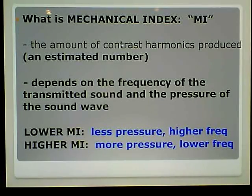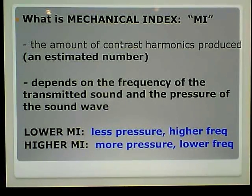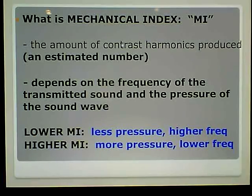The Mechanical Index is the amount of contrast harmonics produced. It is an estimated number. This is covered extensively in the textbook, but the registry will ask you: the MI is the amount of contrast harmonics produced, and it is an estimated number. It depends on the frequency of the transmitted sound and the pressure of the sound wave.